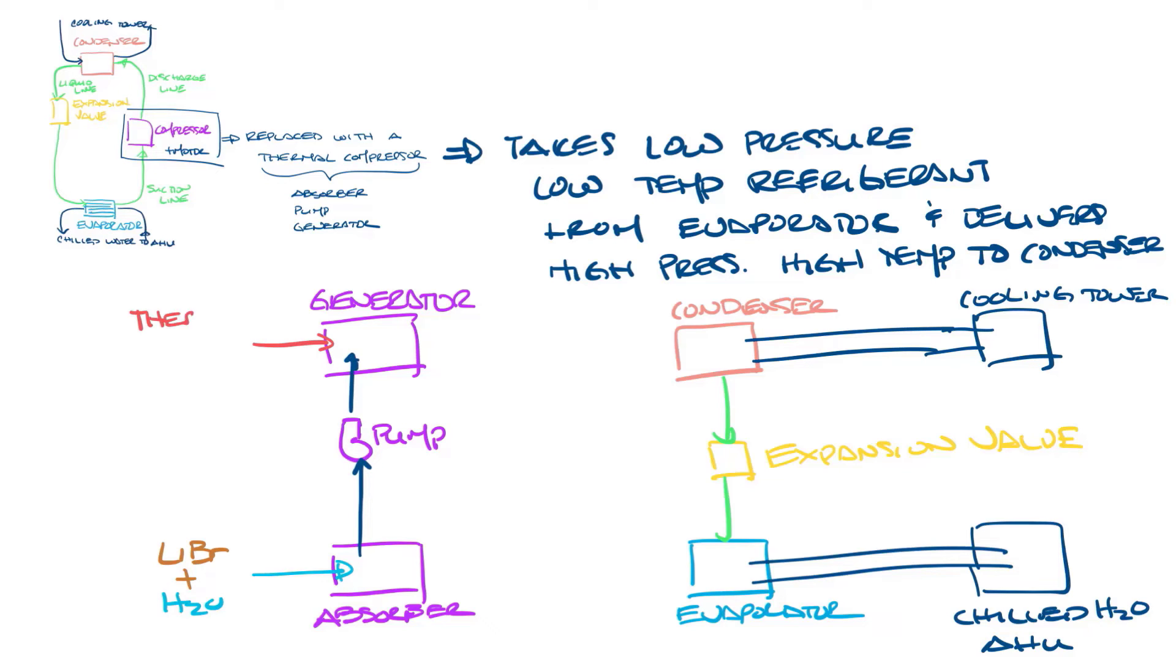In the generator, the refrigerant is boiled using thermal energy. The heat separates the lithium bromide and water. The water vapor leaves the generator and goes to the condenser. The lithium bromide is sent back down to the absorber to start that process over again.